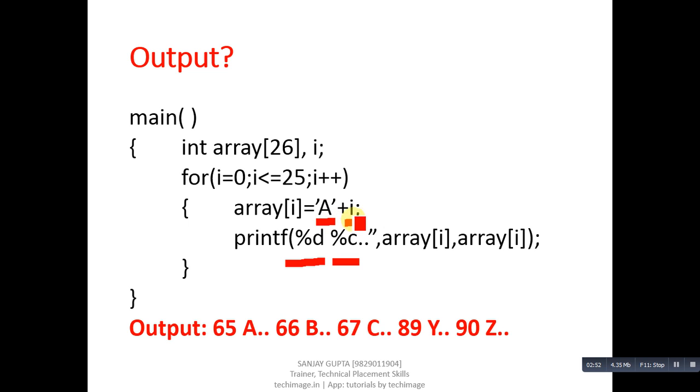So 65 plus 0 equals 65. This array will receive 65 as integer value. If we print array[i] through %d, it prints 65. If we print through %c, then corresponding character is printed which is capital A.